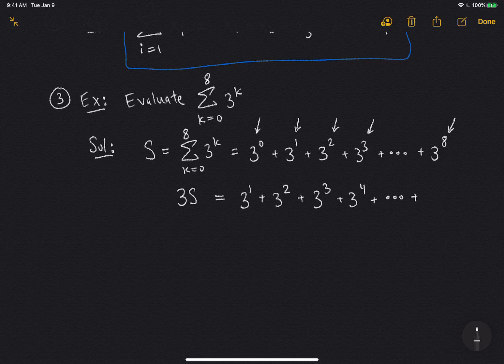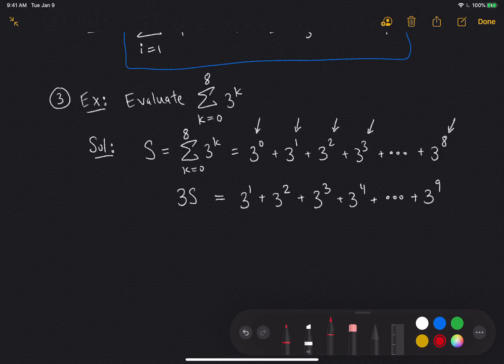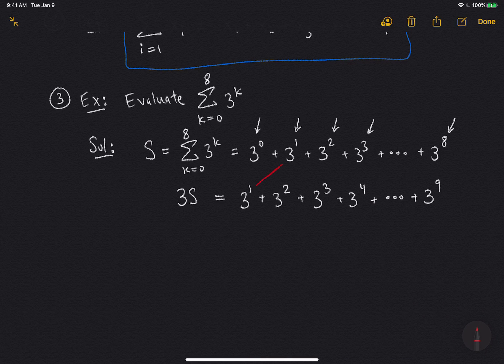And then when I get to the last term, it's 3 times 3 to the 8, which is 3 to the 9. And you might notice a little pattern here, is that all these terms match up. The first sum has 3 to the 1 in it, and the second term also has 3 to the 1 in it. Both sums have 3 to the 2, both sums have 3 to the 3, both sums have 3 to the 4. The only terms that aren't matched up are this 3 to the 0, and this 3 to the 9.